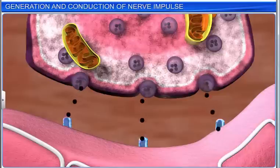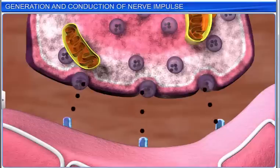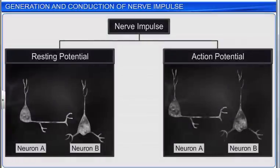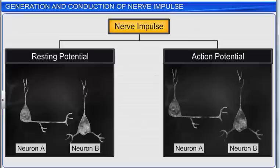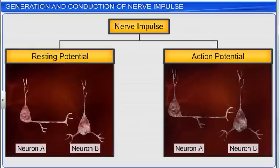The nerve impulse is the sum of mechanical, chemical, and electrical disturbances created by a stimulus in a neuron. The conduction of the nerve impulse can be divided into two main phases: resting membrane potential and action membrane potential.